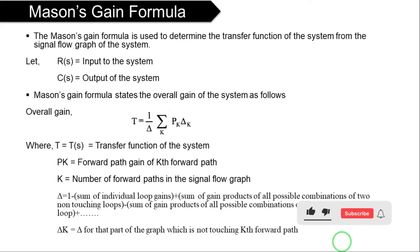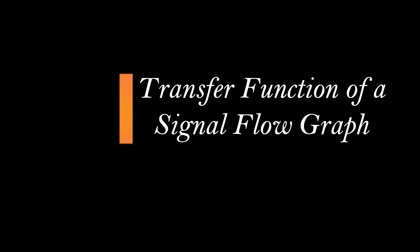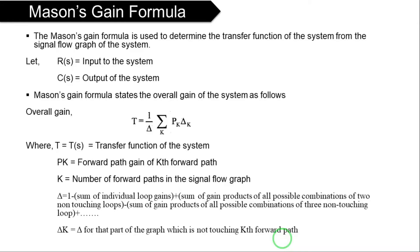Hello guys, in this lecture we will discuss how to find a transfer function for the given signal flow graph. Now we will discuss about Mason's gain formula. To find the transfer function for the given signal flow graph, we have to know Mason's gain formula.